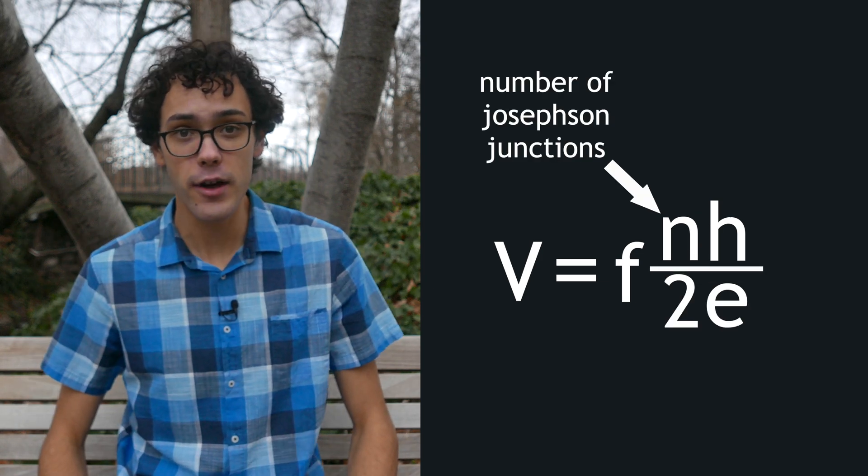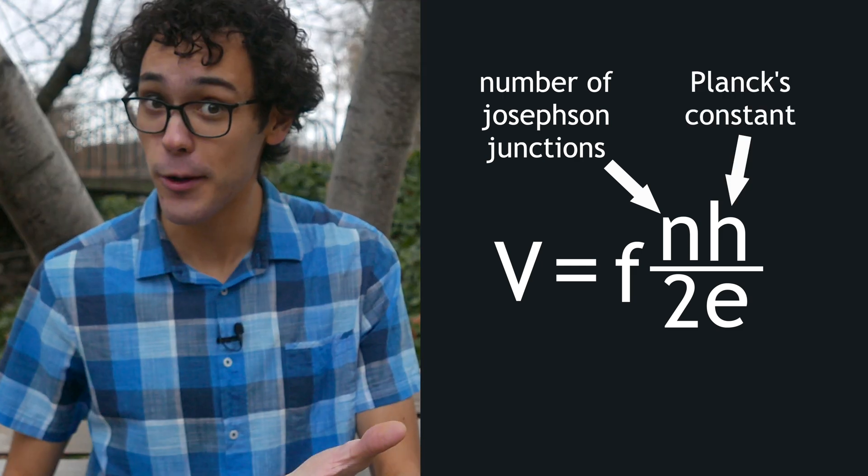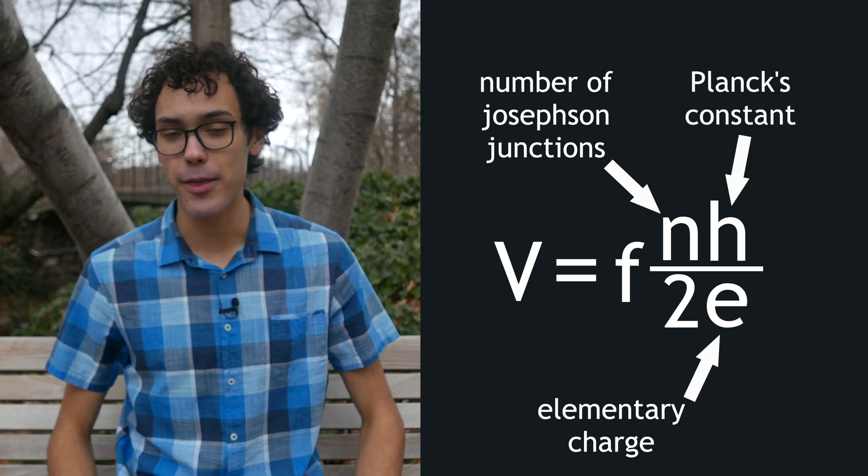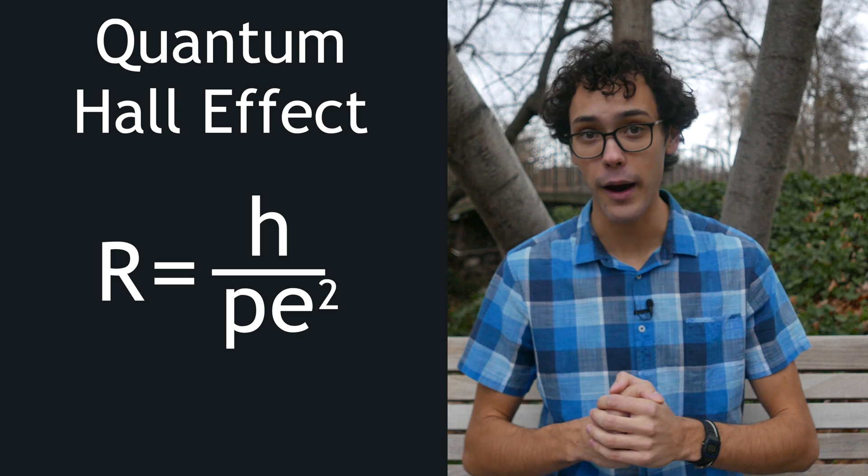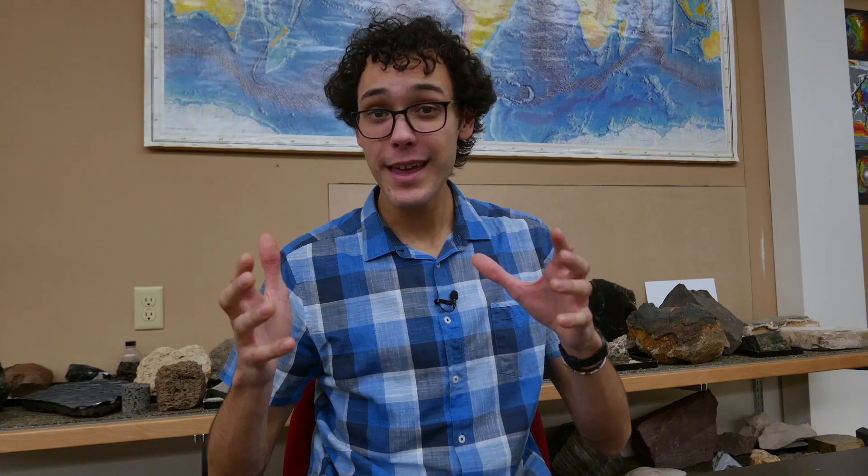where n is the number of Josephson junctions, which is built into the Kibble balance, h is Planck's constant, I told you it was coming back, and e is the elementary charge. Resistance is calculated using the quantum Hall effect, where R equals h over pe squared. h and e are the same, and p is another constant that we know.